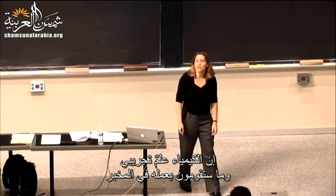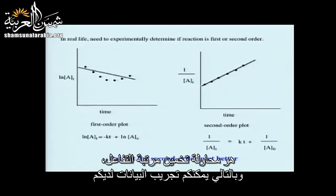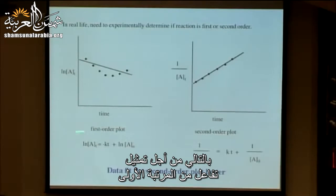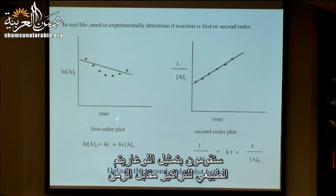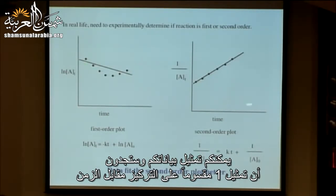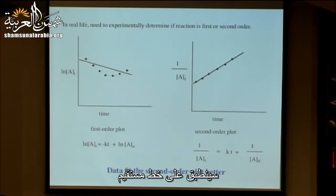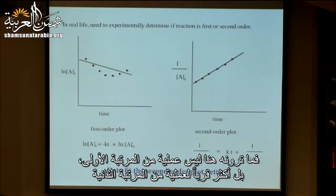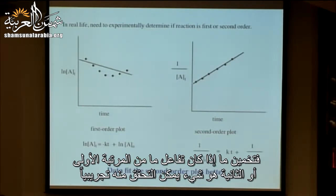Chemistry is experimental — in the lab you'd try to figure out the order of a reaction by plotting your data. For a first-order process, plot the natural log of concentration versus time; for second-order, plot 1 over concentration versus time. If the data fits a straight line for 1 over [A] but not for ln[A], the process is second-order, not first-order.